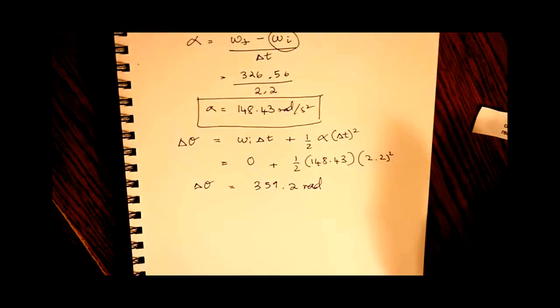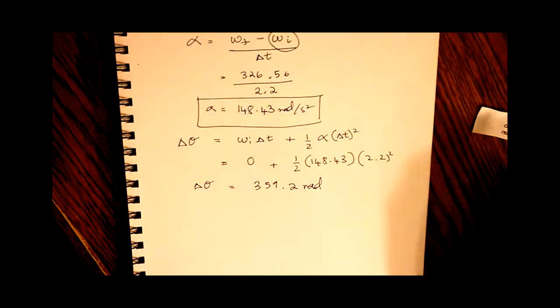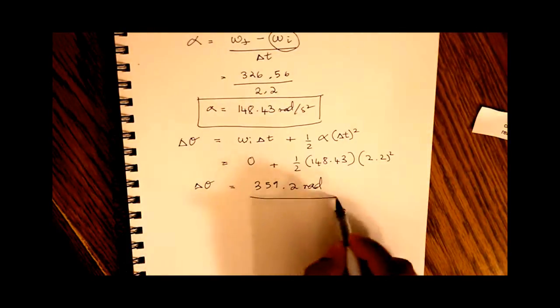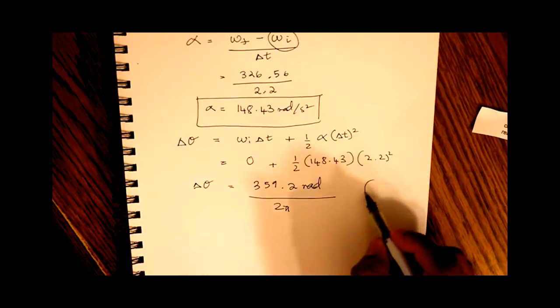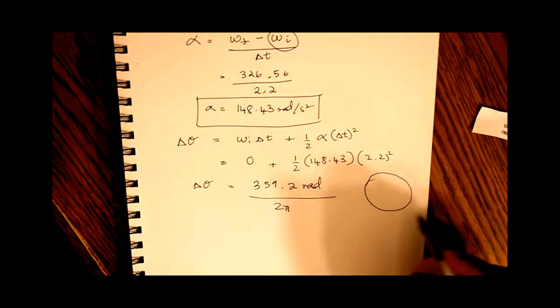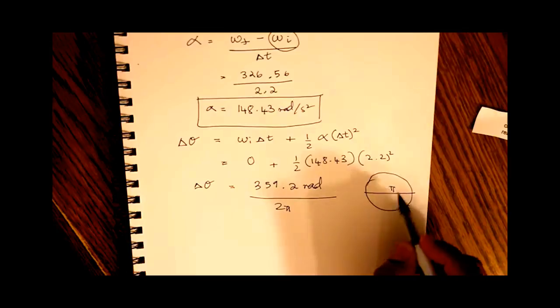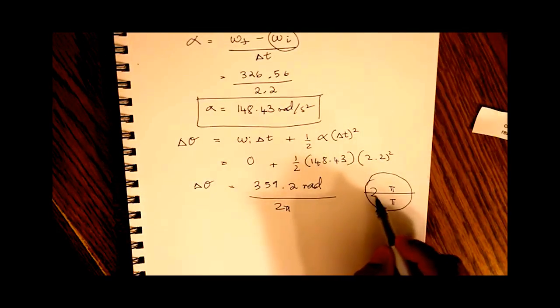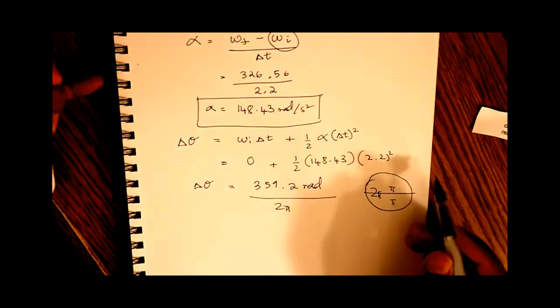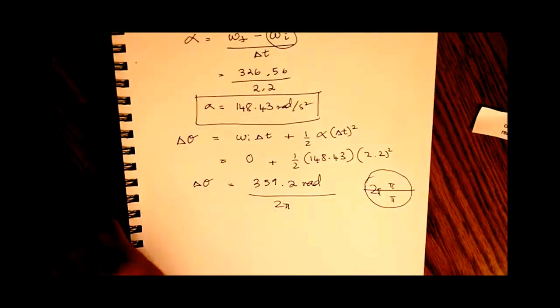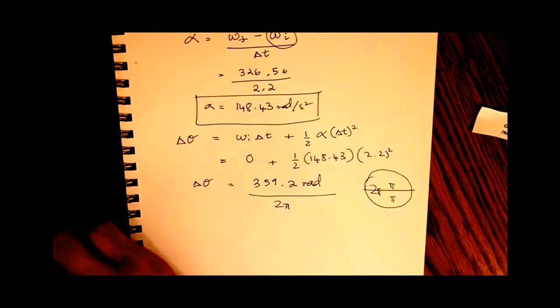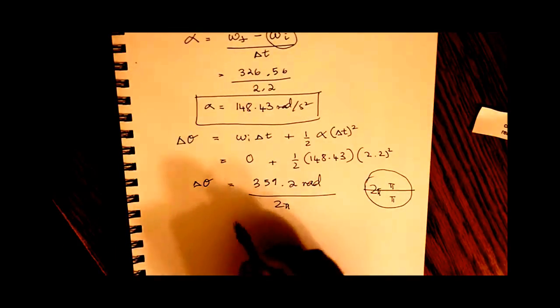Now if we want to find out how many revolutions, we just divide this by 2 pi, because 2 pi is the value of one revolution, or the circle. Pi is half a circle, pi is the next half of the circle, and so 2 pi is the whole circle. So dividing by 3.14, we get number of revolutions.